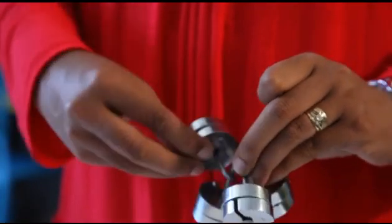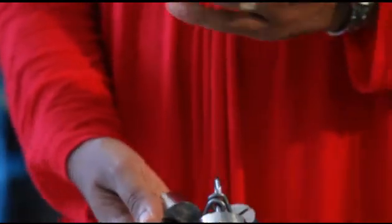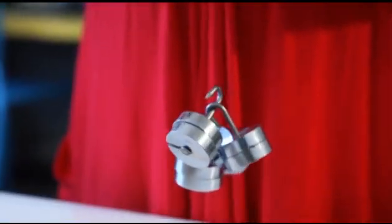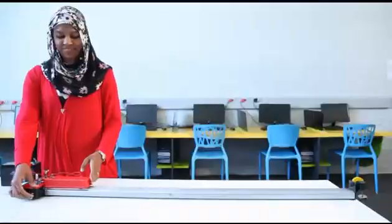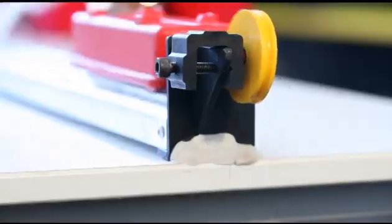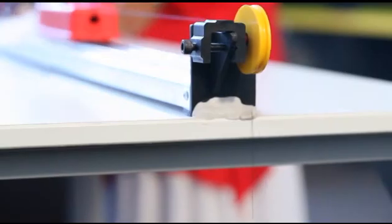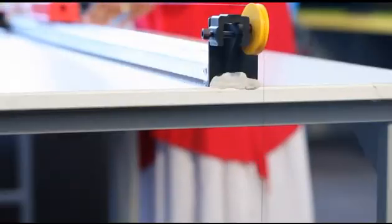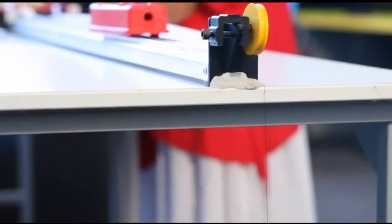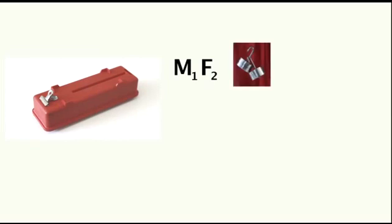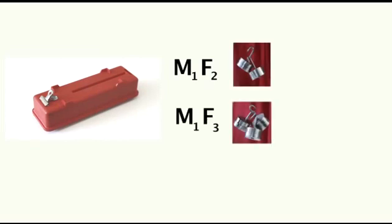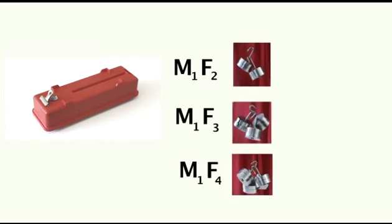Keeping the mass of the trolley constant, repeat this procedure another three times, changing the force on the thread to 2N, 3N and 4N. These tapes will be called M1F2, M1F3 and M1F4.